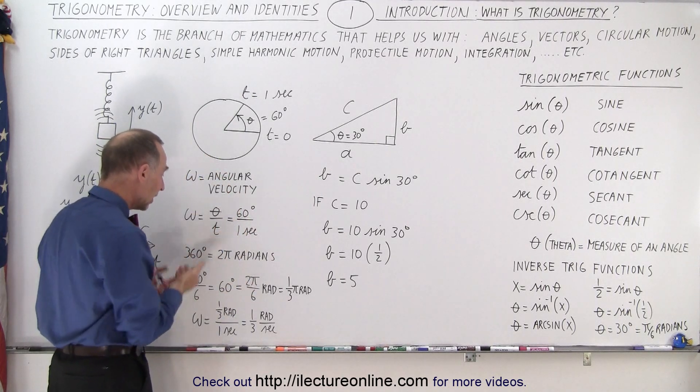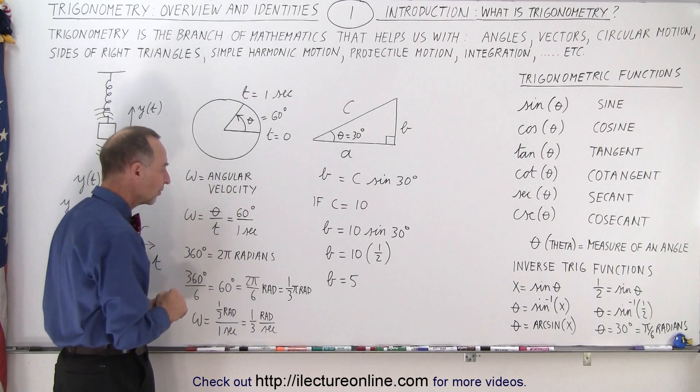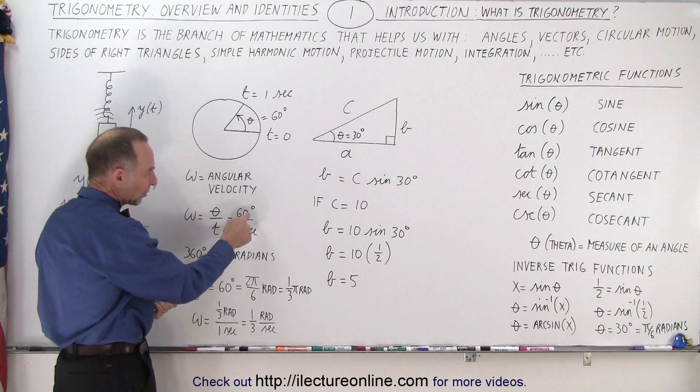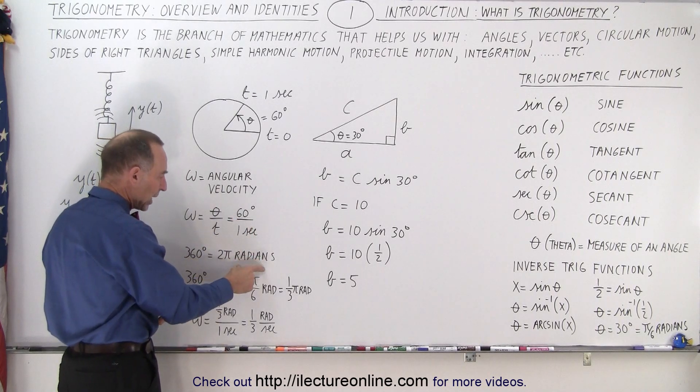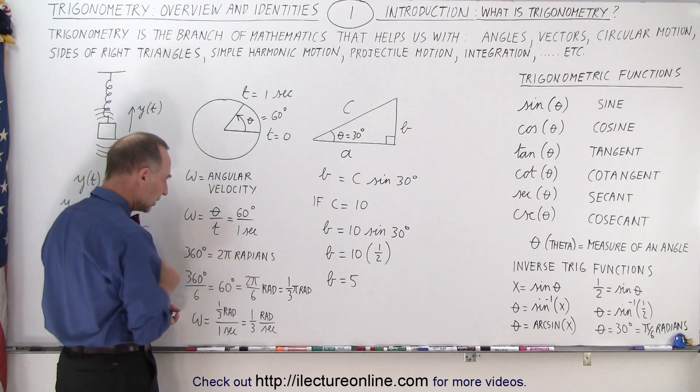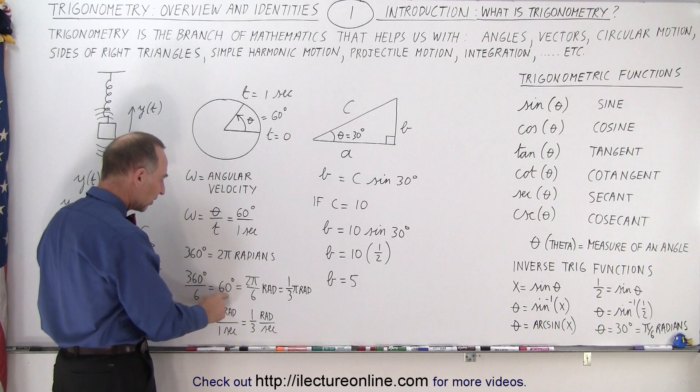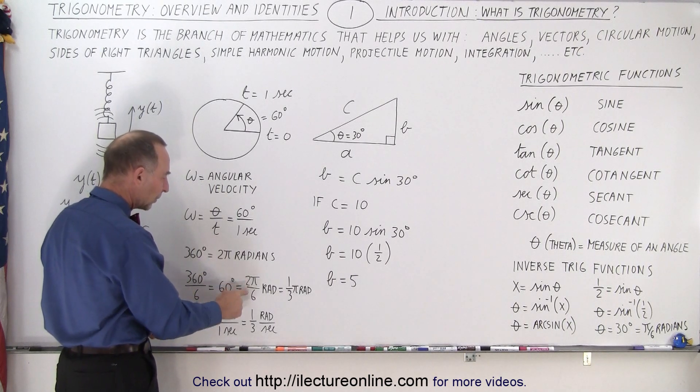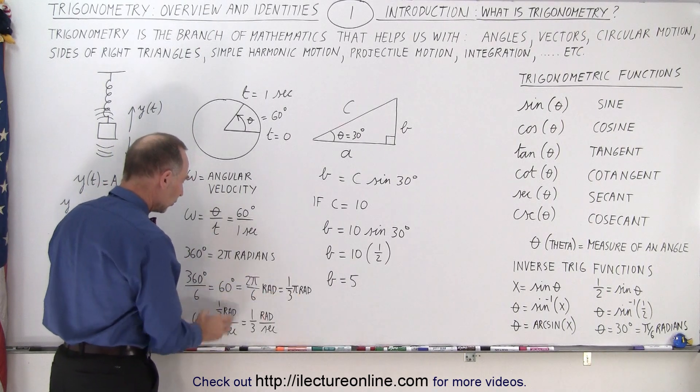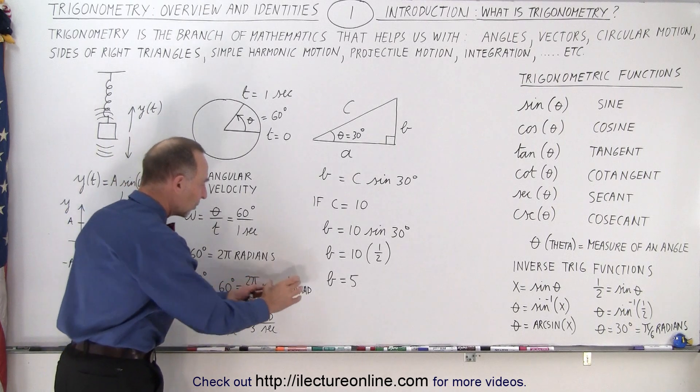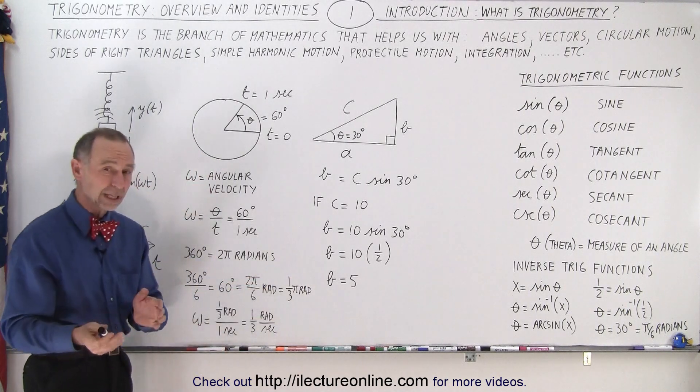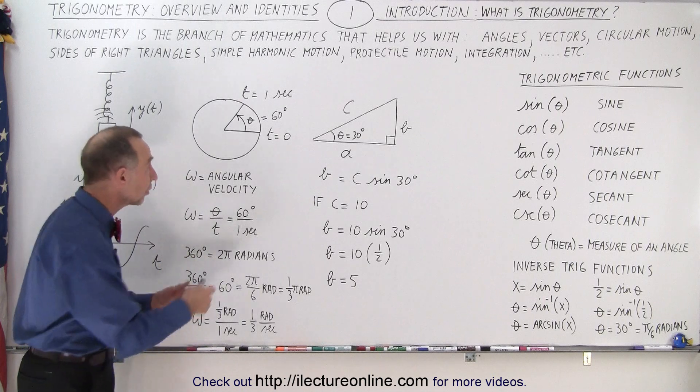We get what we call the angular velocity. However, we tend not to use degrees. We tend to use radians, and 360 degrees equals 2π radians, which means that 360 divided by 6 is 60 degrees. So 2π divided by 6 is one-third π. So 60 degrees is essentially the same as π/3 radians.